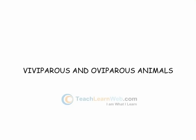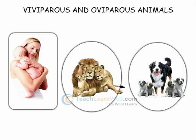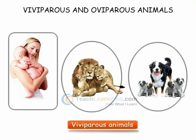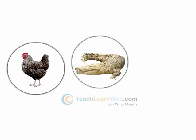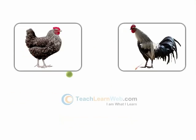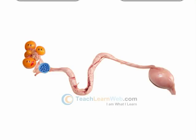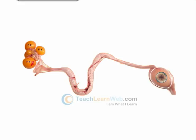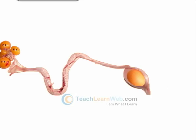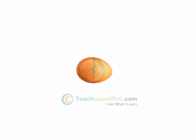Viviparous and Oviparous Animals. The animals which give birth to young ones are called viviparous animals. The animals which lay eggs are called oviparous animals. In oviparous animals, after fertilization, the zygote divides and travels down the oviduct. As it travels down, many protective layers are formed around it, and finally it is covered by a hard shell which acts as a protective layer. After the embryo develops into a chick, it bursts open the eggshell and comes out.